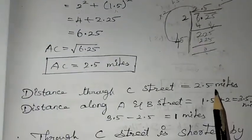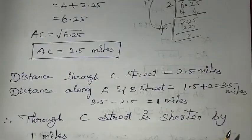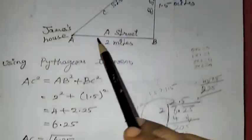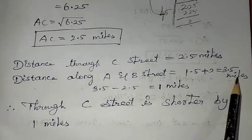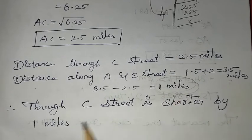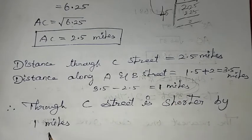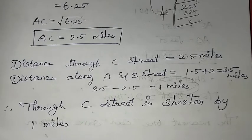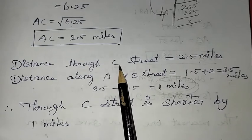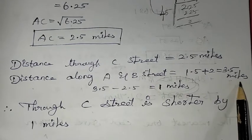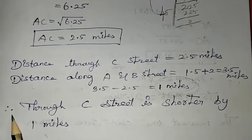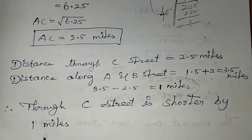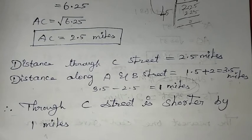The distance through C Street is 2.5 miles. The distance along A and B street is 1.5 plus 2 equals 3.5 miles. 3.5 minus 2.5 equals 1 mile. Therefore, through C street is shorter by 1 mile. If we ask the question, what is the shorter distance and by how much, C street is 2.5 miles compared to 3.5 miles. Therefore through C street is shorter by 1 mile. Thank you so much for watching students, bye bye.